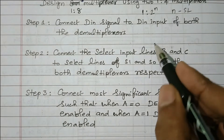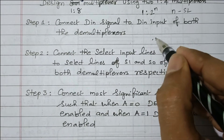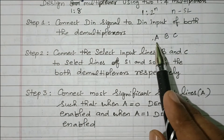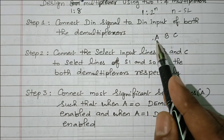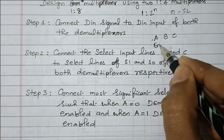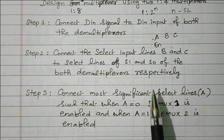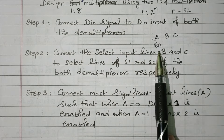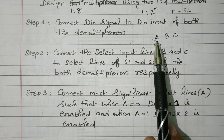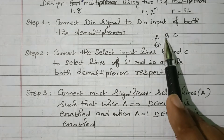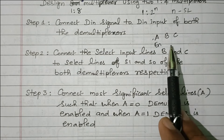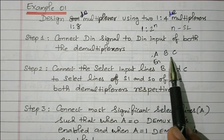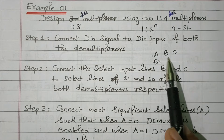Step 2: there are 3 selection lines for the 1-to-8 demultiplexer. Consider 3 signals A, B, C, where A is the most significant bit and C is the least significant bit. The most significant bit A is used for enabling the demultiplexers, since we have two 1-to-4 demultiplexers and need to enable one at a time. B and C are used as the selection lines S1 and S0 for both demultiplexers.